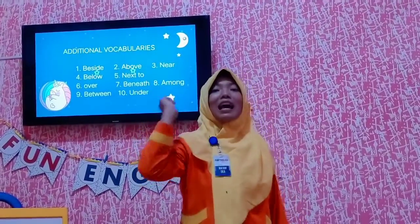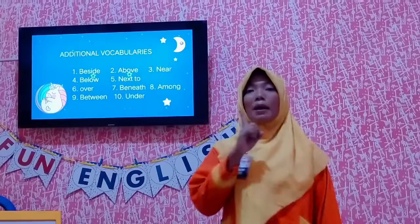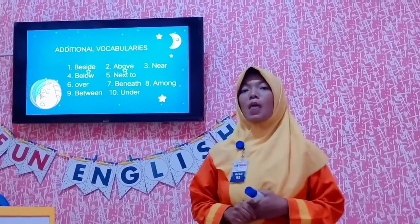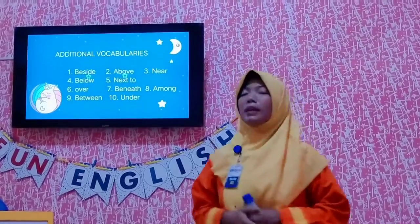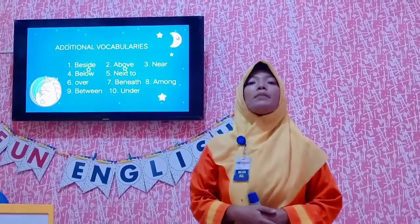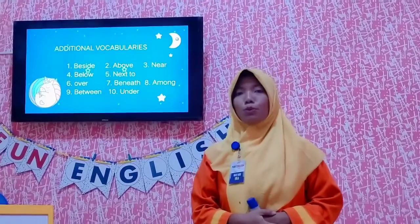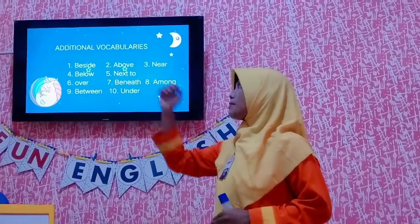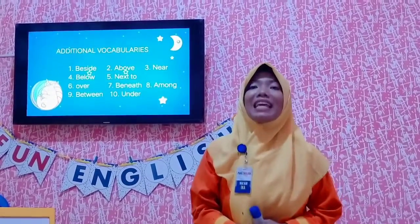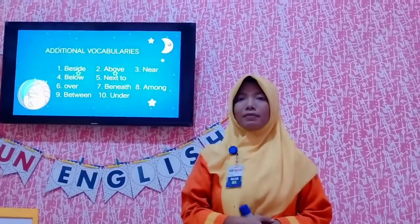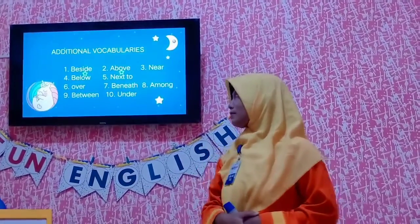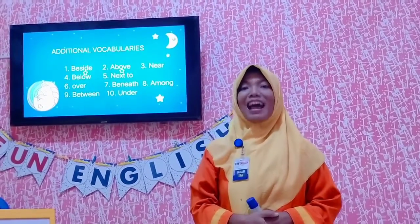This is the additional vocabularies. Repeat after me. Number 1: beside. Number 2: above. Number 3: near. Number 4: below. Number 5: next to. Number 6: over. Number 7: beneath. Number 8: among. Number 9: between. Number 10: under. Okay, good job, kids.